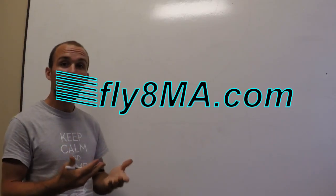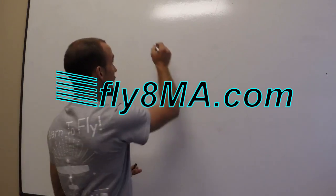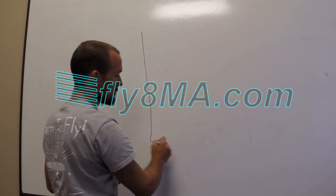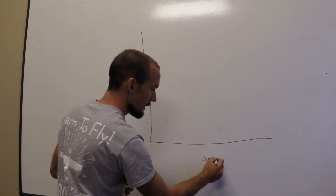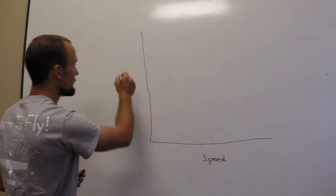The Power Curve is really just a relationship between speed and drag. So we're going to draw a standard little graph here. Bottom axis is going to be our speed and our vertical axis is going to be our drag.